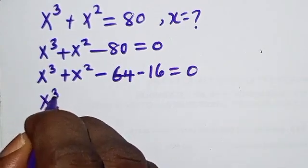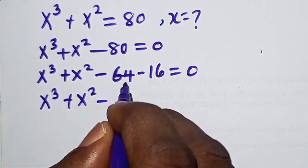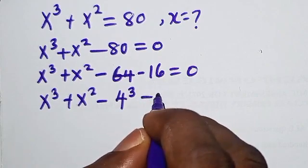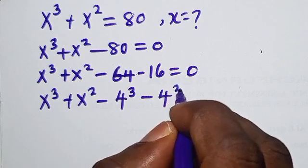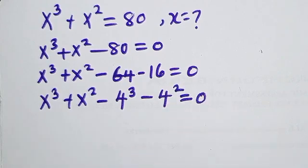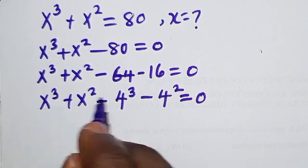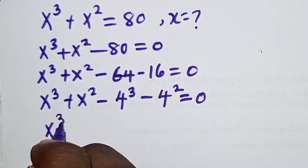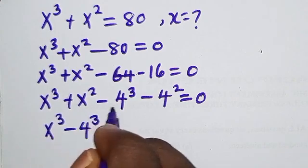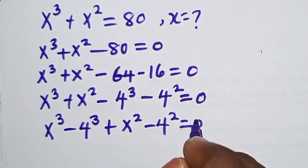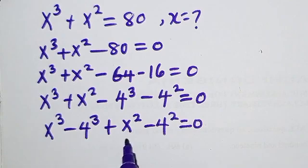So we have x³ + x², and 64 can be written as 4³, and 16 can be written as 4². Equals 0. Now I'm going to connect terms with the same power: x³ minus 4³, then x² minus 4², equals 0.